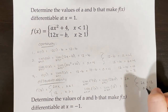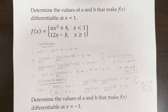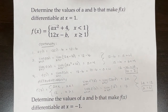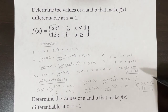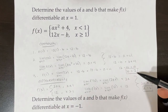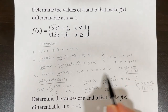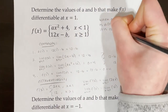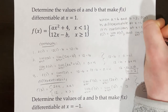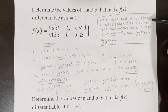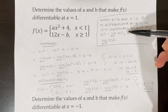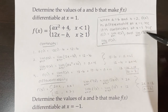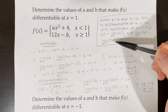On a multiple choice question you could stop here, but on a free response question you need additional justification. When a equals 6 and b equals 2, f of x is differentiable at x equals 1 because it is continuous at x equals 1 — f of 1 equals the limit as x approaches 1 of f of x — and because the limit as x approaches 1 from the left of f prime of x equals the limit as x approaches 1 from the right of f prime of x.